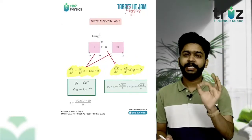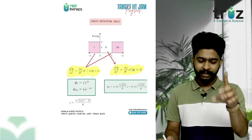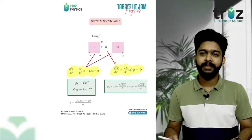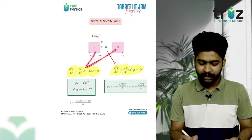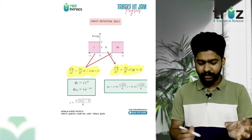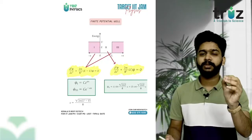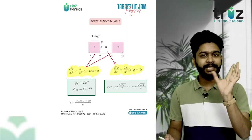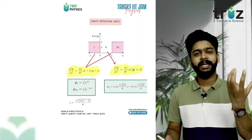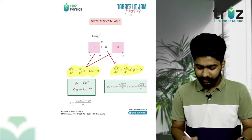This is the finite potential well. There are three regions, so we separate the problem. Regions one and three are the same type, with energy E less than V. The equation is -d²x/dt² - ω²x, and the solution is e^(kx). For the constants c and g, note that V minus E is not the same as E minus V — that is the boundary condition.